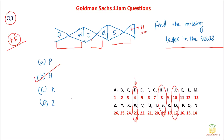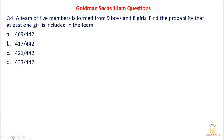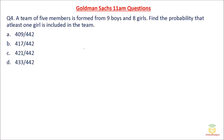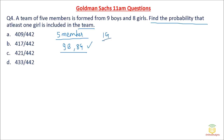Question number 4 is a probability question. A team of 5 members has to be formed from 9 boys and 8 girls — 17 people total. Find the probability that at least one girl is included in the team. Probability equals favorable outcomes (NE) divided by total sample space (NS). The total sample space is 17C5.